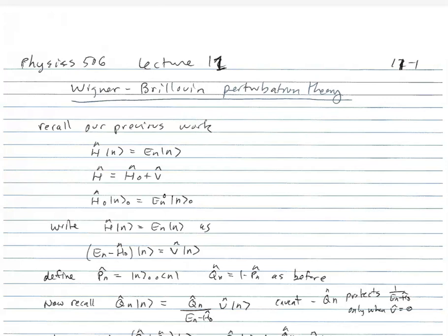Welcome to Lecture 15. This lecture is on Wigner-Brillouin perturbation theory. This is a method that you've probably not seen before. It is a technique that organizes the perturbation series in a different way. It effectively sums an infinite number of terms. Sometimes this is a better thing to do.